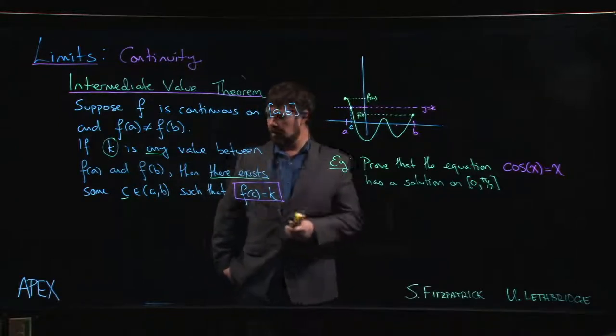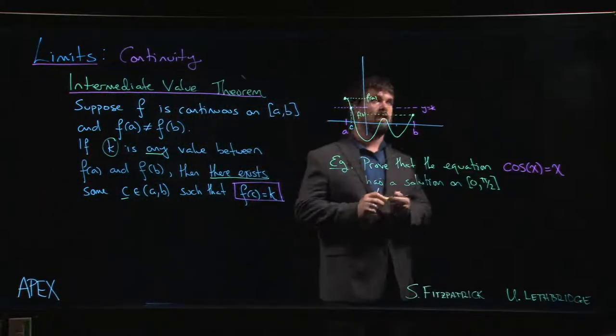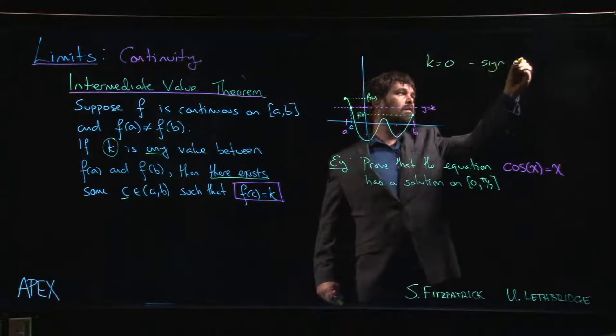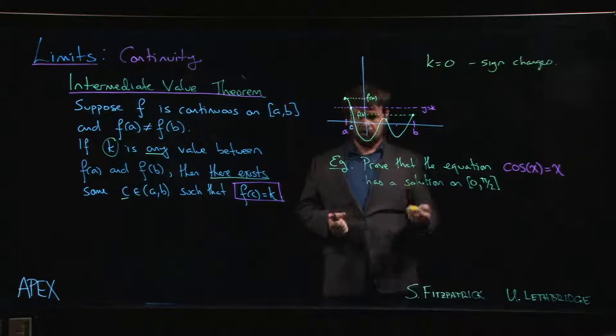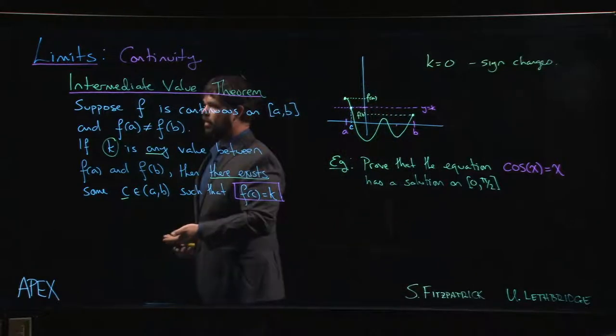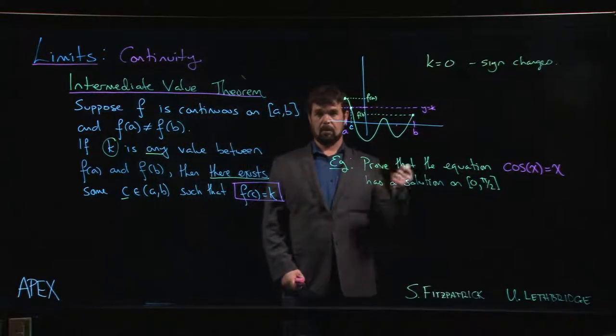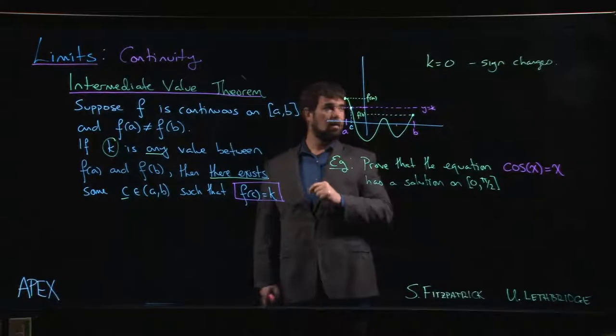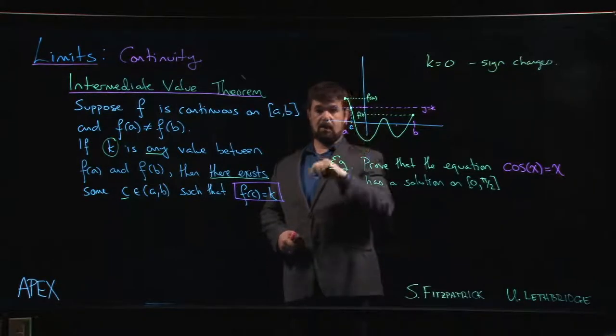One way of paraphrasing the intermediate value theorem is frequently what we do is look at it in the context where k is zero. If you're looking at k equals zero, that means you're looking at sign changes. We've already seen a number of problems where we write down sign diagrams, these sign charts, to figure out where a function is positive or negative. What the intermediate value theorem is telling you is that there are only two types of points where a function can switch from positive to negative. Either it changes from positive to negative at a zero, because if k is zero, if f is negative on one side and positive on the other side, then there has to be a point in between where the function is exactly zero.